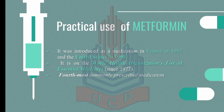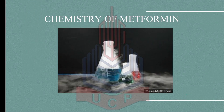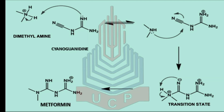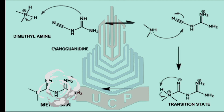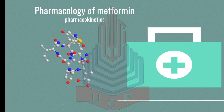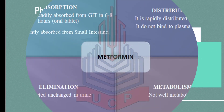Moving toward the chemistry of metformin: cyanoguanidine reacts with dimethylamine to form a transition state molecule, and ultimately we get the metformin molecule.